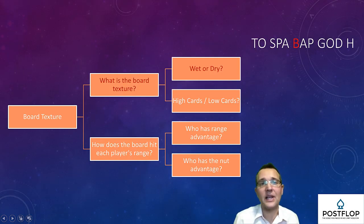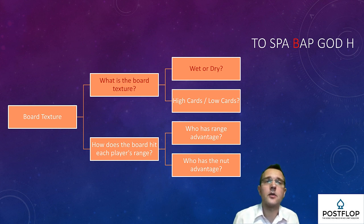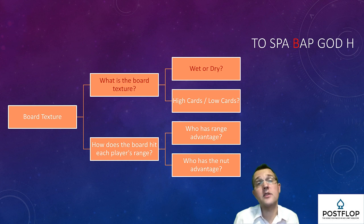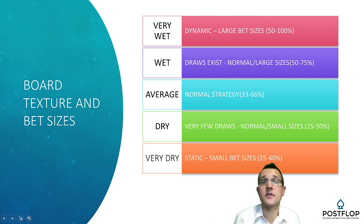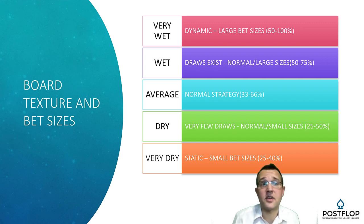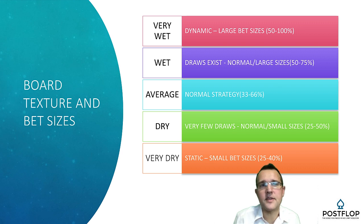Board texture is the only completely new element, so we need to spend some time on this. The first key question to ask is: what's the board texture? You ought to be able to define the flop as wet, average, or dry. Broadly speaking, wet flops have suited or connected cards on them, whereas dry flops are rainbow and unconnected. Board texture is important for lots of reasons, and one of them is for bet sizing. SPR can influence bet sizing, as can bluff-heavy or value-heavy ranges, but for now just consider the wetness of the board and its impact on your bet sizing.